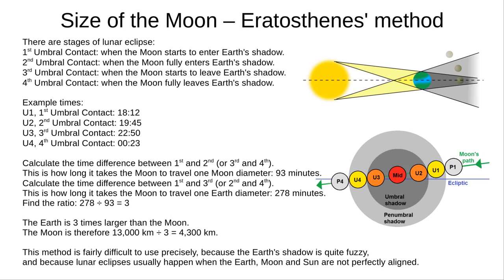We need to determine four moments called umbral contacts and the times when they occur. These are when the moon enters or leaves the umbra, so we can ignore the penumbra. First umbral contact is when the moon starts to enter the umbra. Second umbral contact is when the moon fully enters the umbra. Third umbral contact is when the moon starts to leave the umbra.